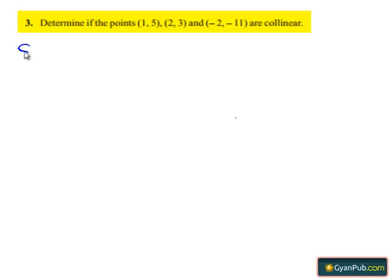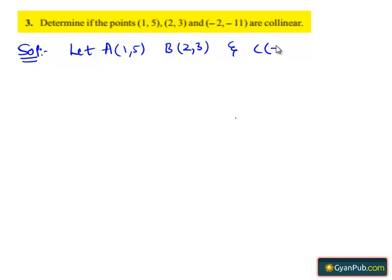Moving on to the solution, let the given points be A(1,5), B(2,3) and C(-2,-11). Here, we need to find if the points (1,5), (2,3) and (-2,-11) are collinear.